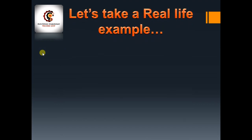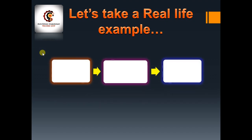Let's take a real-life example. The example has three blocks: the first is the sensors, the second is the computer, and the third is the output. The sensors block has different types — position sensor, height sensor, speed sensor, temperature sensor, location sensor, humidity sensor, and so on. The center block is a computer — a microcontroller or microprocessor. Any guesses for the output? That's correct — an airplane!